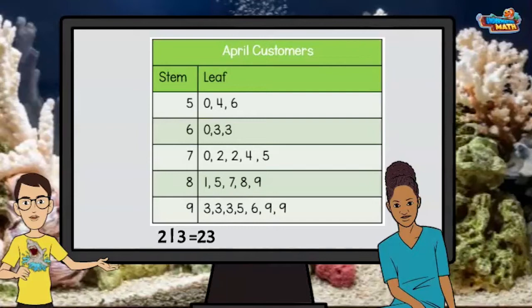What does each column represent? Well Gilbert, first let's look at the key listed under the chart. This shows us the stem 2 and the leaf 3 equals 23. In this particular chart, the leaf is representing the ones place and the stem is representing the tens place.